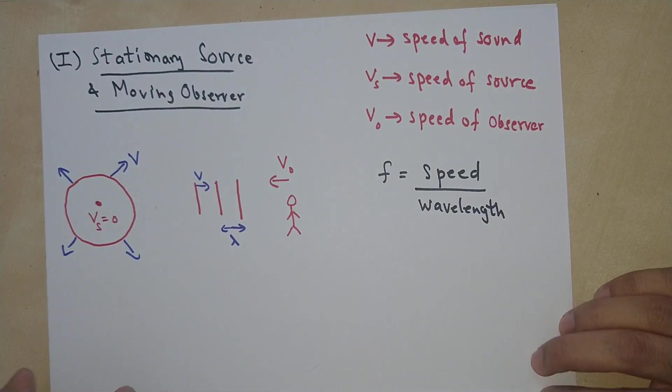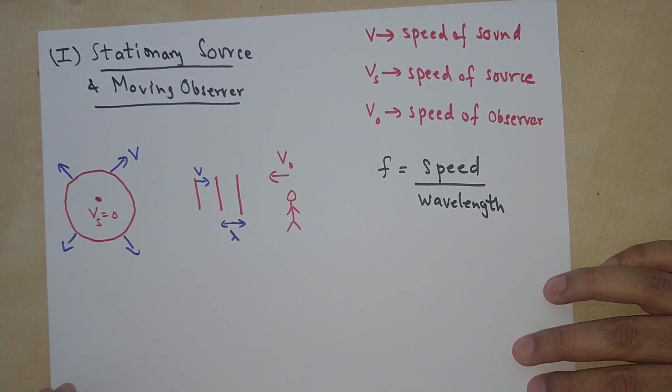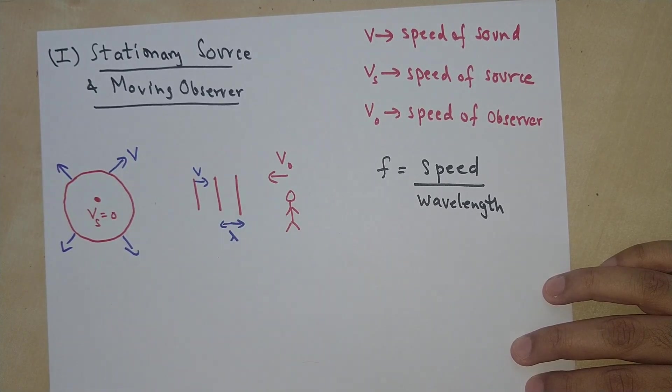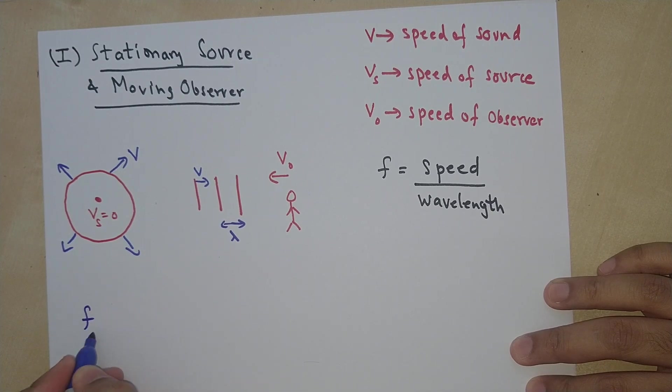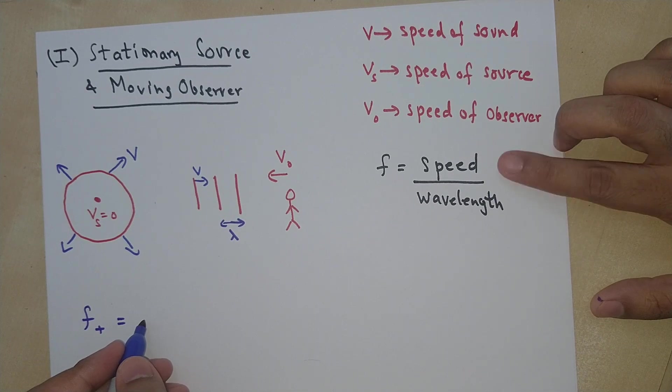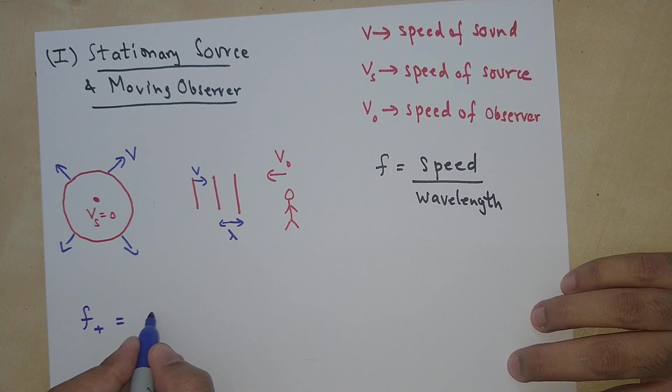But the relative velocity of the observer relative to the sound wave is gonna change. So in other words, let's just write the equation now. So the relative speed changes and the wavelength stays the same.